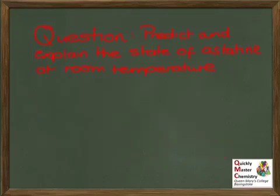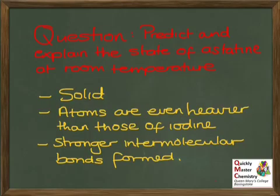Here's a question to check your understanding: predict and explain the state of astatine at room temperature. Hopefully you decided it would be a solid, since the volatility of the halogens decreases down the group. Iodine is a solid, so astatine we'd expect to be even less volatile — and also a solid. You can explain this in terms of the mass of the astatine atoms, and therefore the number of electrons, the size of the instantaneous and induced dipoles, the strength of attraction, and hence the amount of energy needed to break the intermolecular bonds between the molecules.